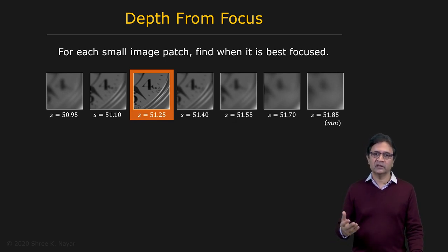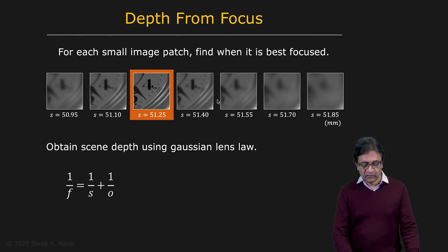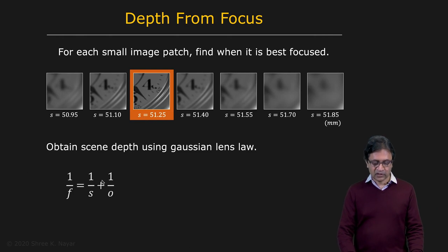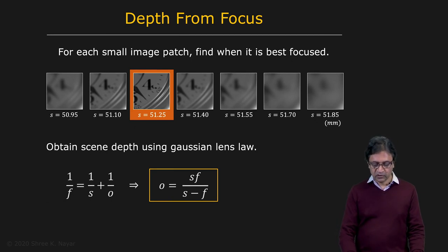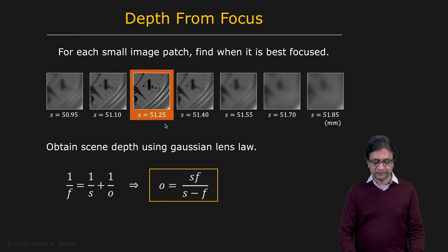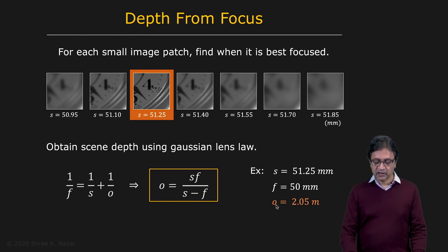If we have a method for figuring out when a scene patch is best focused — identifying that this is the best focus among all values — we have the sensor location S corresponding to that. We can then use the Gaussian lens law to estimate the distance of the point from the lens: Z equals S times f divided by S minus f. For example, with S equal to 51.25mm and focal length 50mm, the object distance is 2.05 meters.